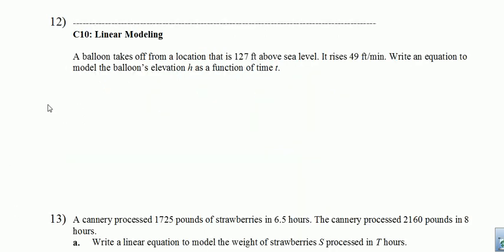All right, a couple linear modeling questions here. We've got a balloon that takes off from a location that's 127 feet above sea level. It rises at 49 feet per minute. We're asked to write an equation to model the balloon's elevation, H, as a function of time, T. We need to understand a few things here. We need to understand that when you see feet per minute, you're looking at a rate. And when you're looking at a rate, you're looking at a slope when we're dealing with linear equations.